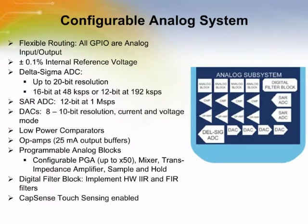The configurable analog system uses separate modules. The PSOC 3 and 5 architecture has a huge portfolio of analog IP. The exact configuration depends on the product family. It includes a 20-bit Delta Sigma converter sampling at 80 samples per second.